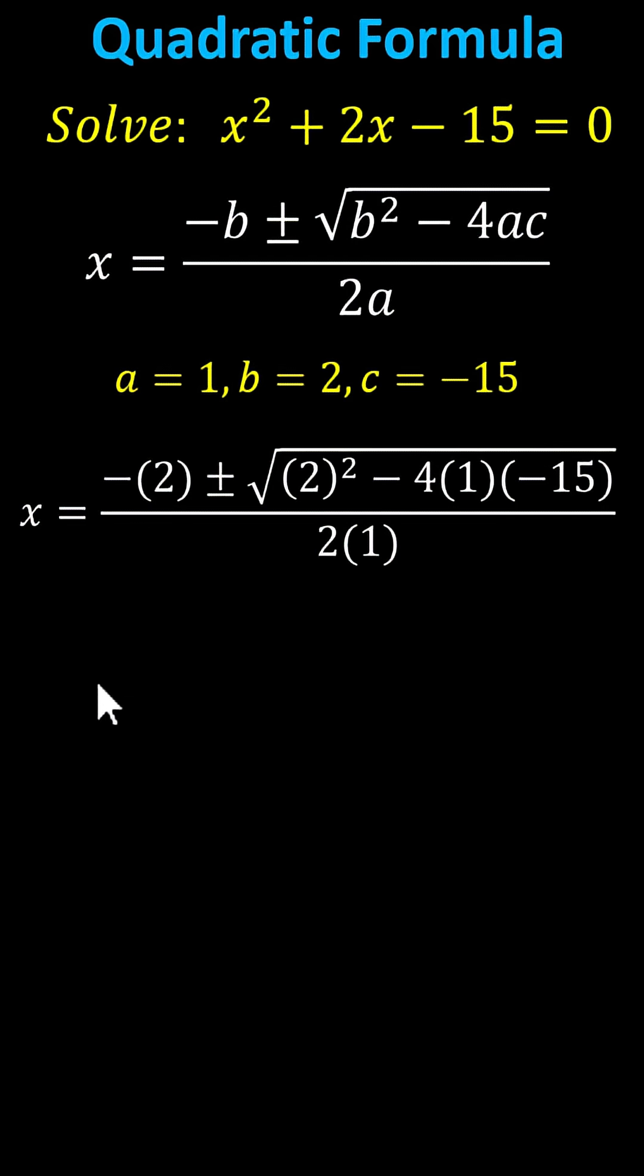And now we simplify. We have x equals negative 2 plus or minus the square root of 4 minus negative 60, which simplifies to 4 plus 60 under the square root, all divided by 2.